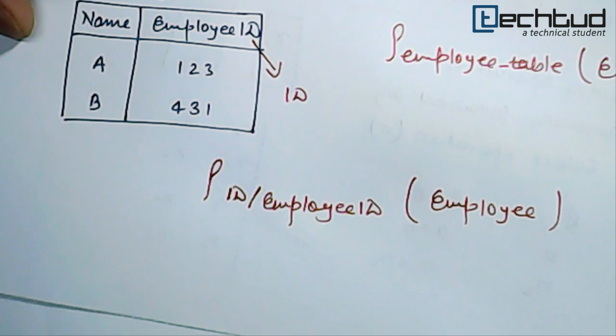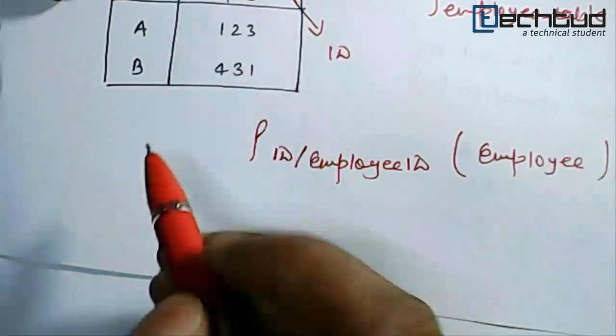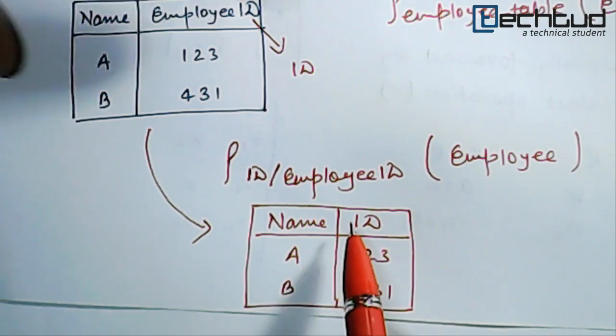The resultant table will be something like this - here the EmployeeID attribute has been renamed as ID only. So that's how this rename operator works. Very simple to understand.